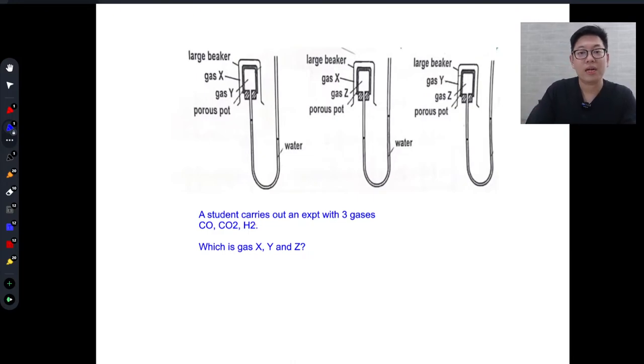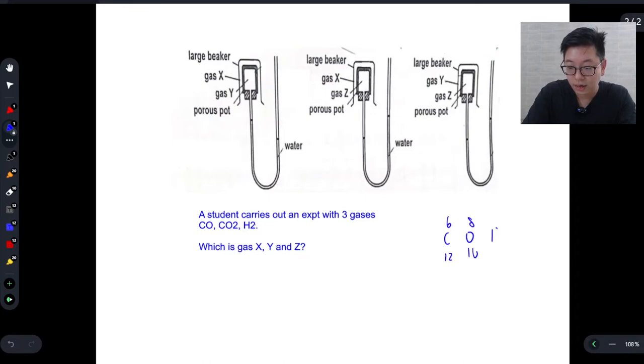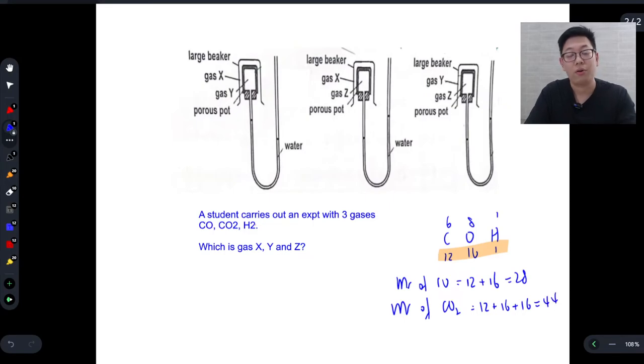So before we start, we need to first of all determine the MR. So carbon is 12, oxygen is 16, hydrogen is 1. The MR of carbon monoxide is 12 and 16, so we are just using the numbers below, and you get 28. The MR of carbon dioxide is 12 and 16 and 16 because it's CO2 and you get 44.